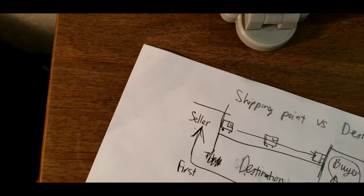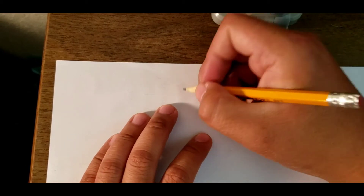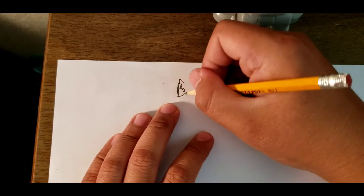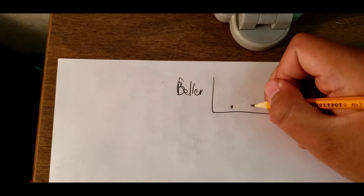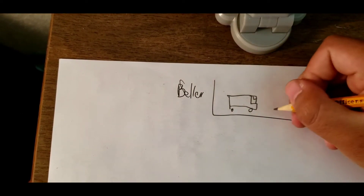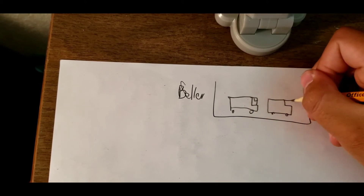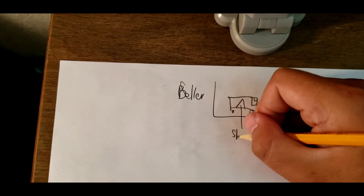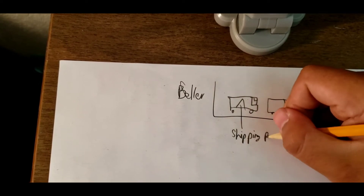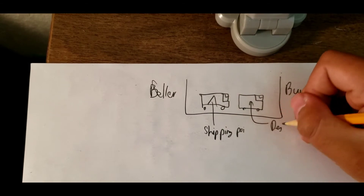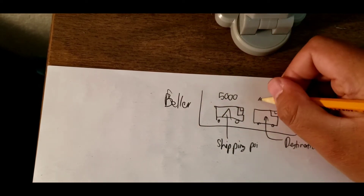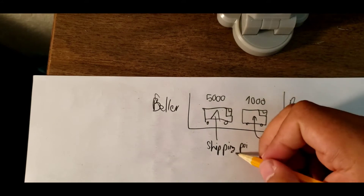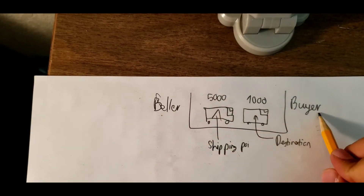Let me give you an example. We have a seller and a buyer, and there are two trucks. This one is shipping point and this one is destination. The shipping point one is five thousand dollars, and the destination one is one thousand dollars.